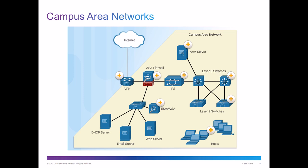The layer 3 switches allow you to connect between VLANs. The WSA is also used to check for threats — it's a type of IPS, but it does not sit inline with the network.